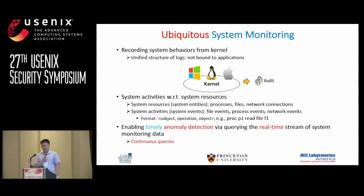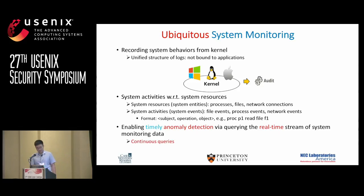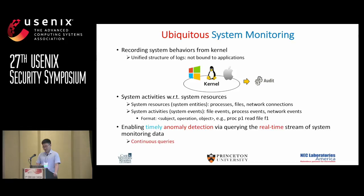System monitoring collects information about system calls from kernels. The audit logs produced have a unified structure not bound to specific applications. These logs record information about how applications interact with system resources — such as files, processes, and network connections — in the form of system events. Recognizing the need for timely anomaly detection and the complexity of APT attacks, we propose to leverage stream processing and continuous queries to enable real-time abnormal system behavior detection.